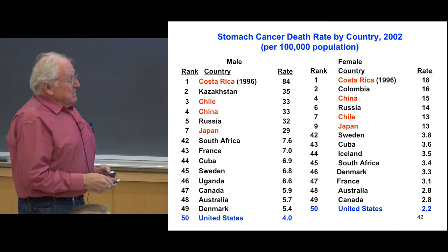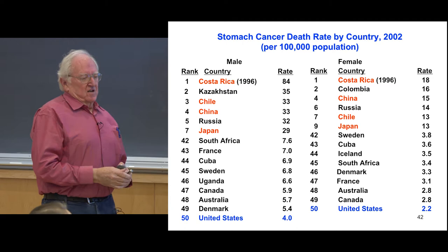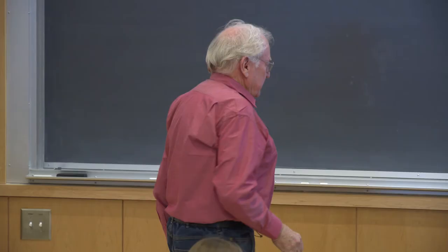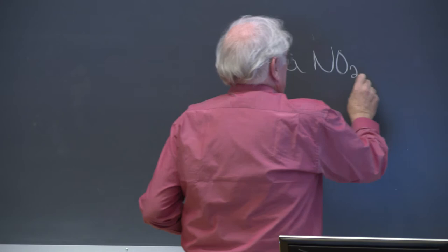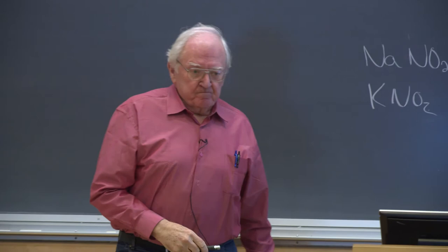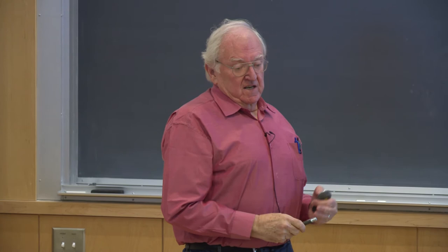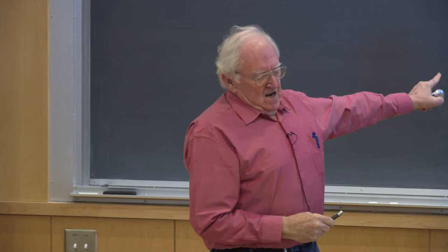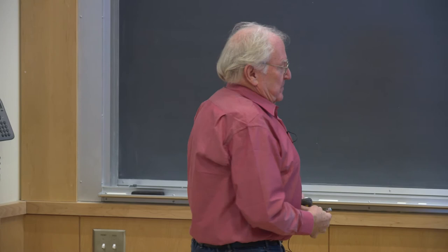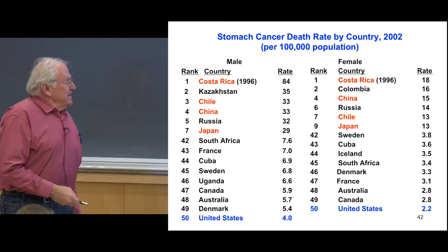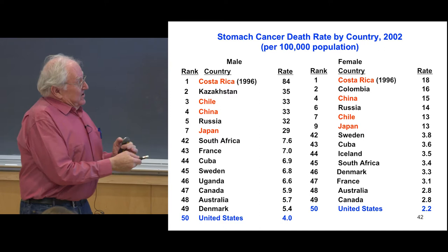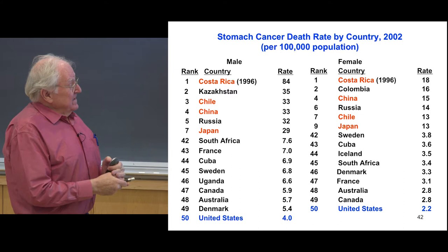Stomach cancer — Costa Rica, males and females, has the highest stomach cancer death rate in the world. We think it's due to the fact that they mine nitrite (NO2), which gets into the drinking water and food. Moreover, it gets oxidized to nitrate. Nitrate is not a carcinogen, but nitrates can be reduced back to nitrites, and the nitrites are the bad ones. This is also true in Chile, China, and Japan, which produce a lot of nitrites. The U.S. is at the bottom for stomach cancer death rates.